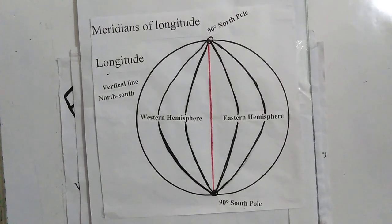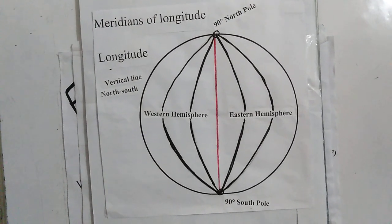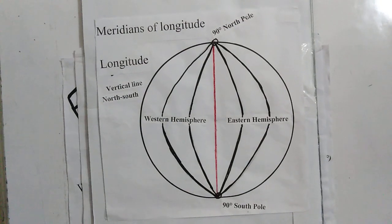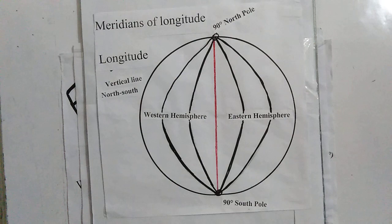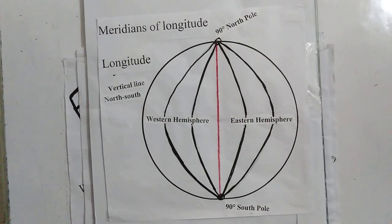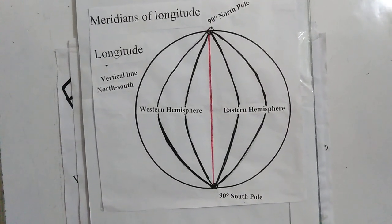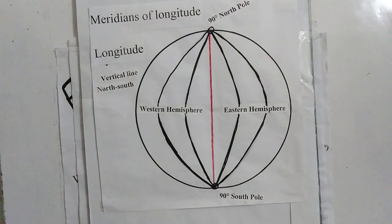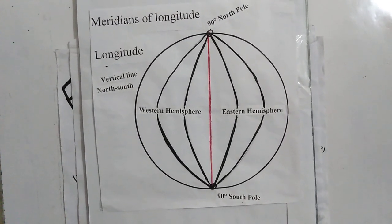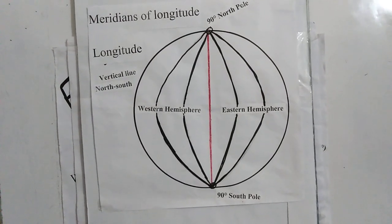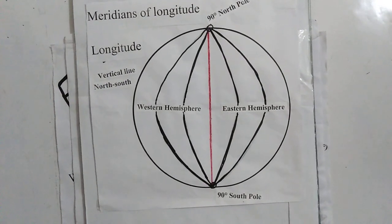Parallels are horizontal lines and full circles, while meridians are semicircles that run from north to south. Latitudes are used to know the temperature and season in different parts of the world, either to the north or south of the equator, while meridians are used to determine the time in different places of the Earth, either to the east or west of the prime meridian.